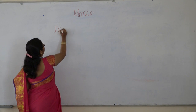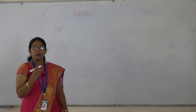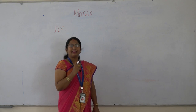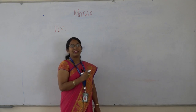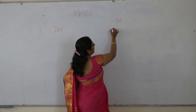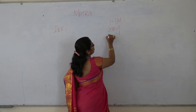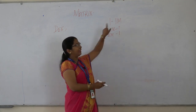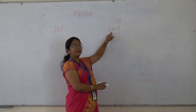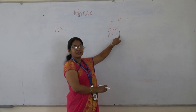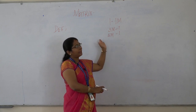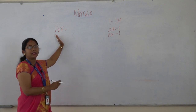Before we start with the definition of matrices, let me tell you the weightage of this chapter prescribed by the PUE board. The weightage of this chapter is nine marks, wherein one question will be asked for one mark, one question will be asked for three marks, and one question will be asked for five marks. Part A contains one question carrying one mark, Part C carries one question for three marks, and Part D contains one question for five marks, totalling nine marks.